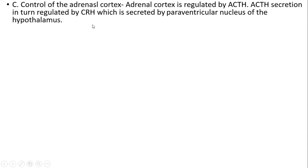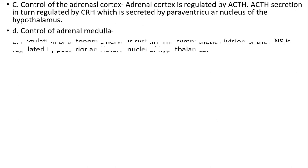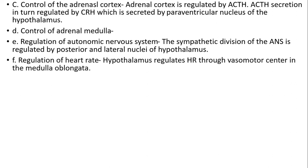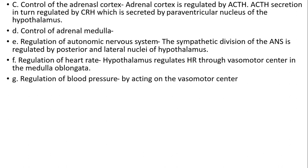Control of adrenal cortex: the adrenal cortex is regulated by ACTH, which in turn is regulated by CRH secreted by the paraventricular nucleus of the hypothalamus. Control of adrenal medulla and regulation of the autonomic nervous system: the sympathetic division of the autonomic nervous system is regulated by the posterior and lateral nuclei of the hypothalamus. The hypothalamus also regulates heart rate through the vasomotor center in the medulla oblongata.